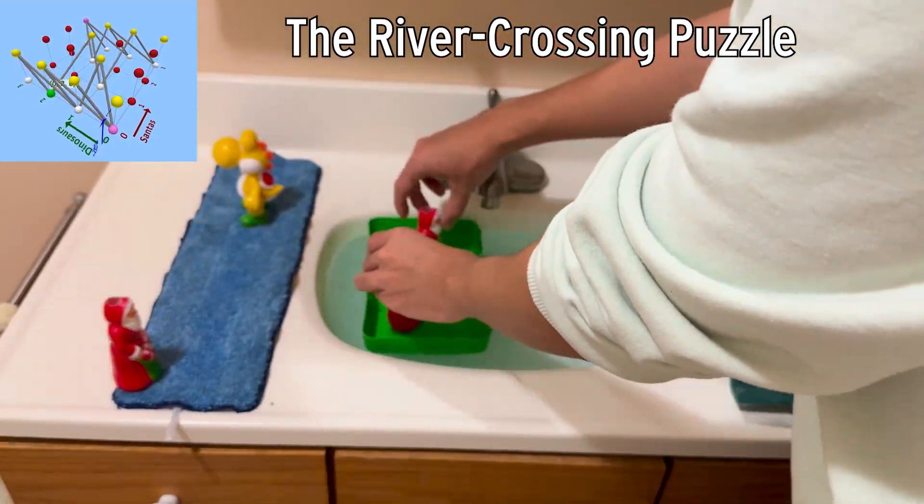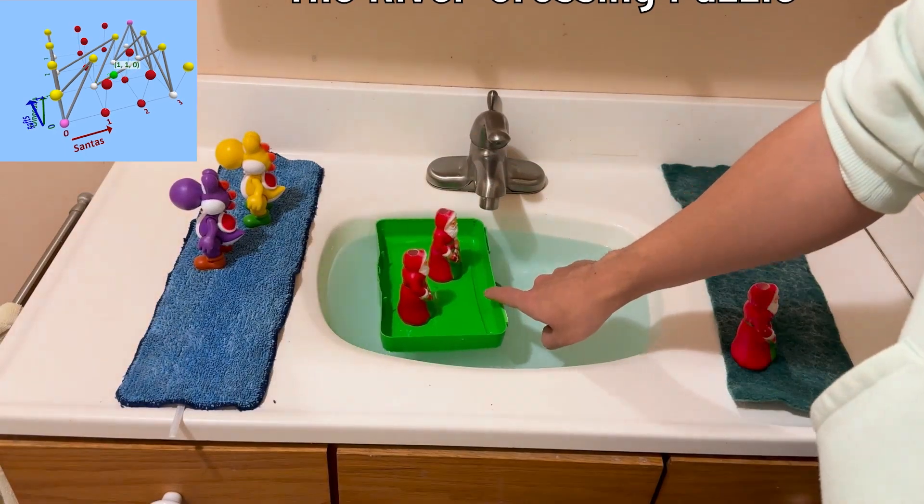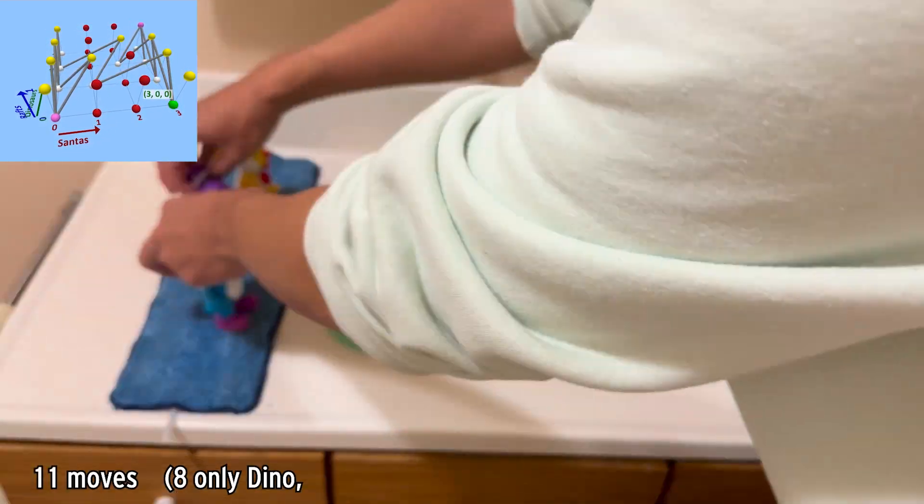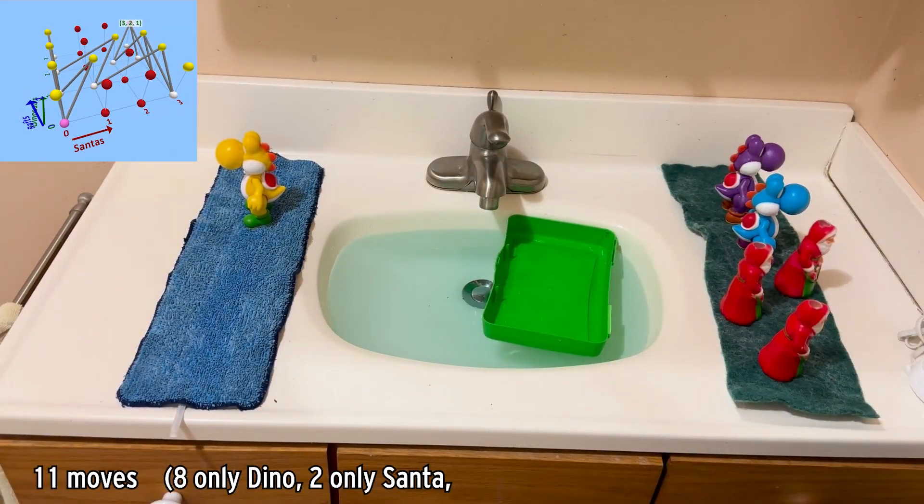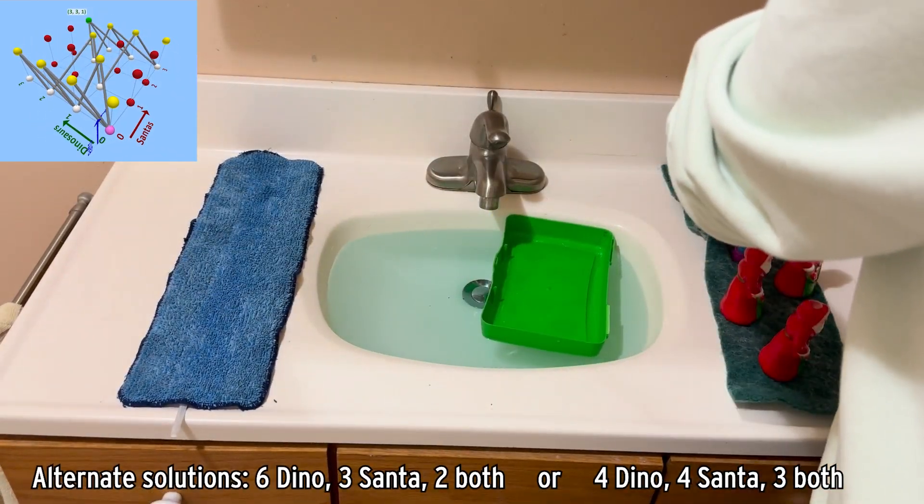And with that, we've solved the river crossing puzzle using a bit of graph theory, and without having to do any trial and error. The solution takes 11 moves, 8 of which involve only dinos, 2 involving only Santas, and 1 which involves both. Although alternate solutions do give the Santas more game time.